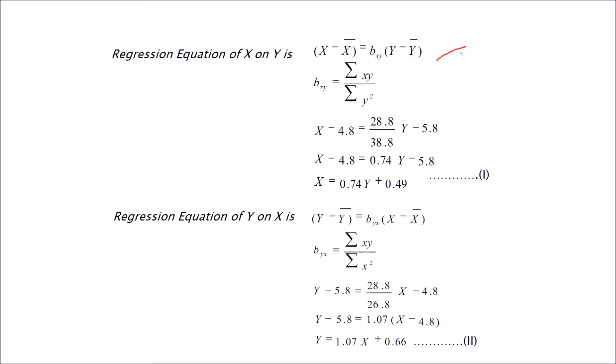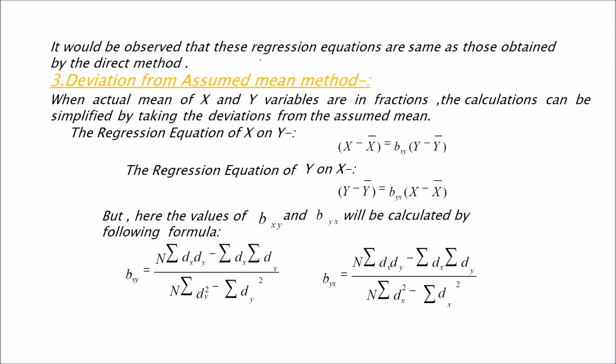Just place in this equation. X minus X bar is equal to BXY times Y minus Y bar. So BXY you will get. Just place in this equation and you will get exactly the same equation as we achieved in the first least square method. Y on X, same stuff, same formula. Just place the value and Y equals 1.07X plus 0.66. Now we have just observed that both the regression equations are same as we have used in the first method, that is the direct method.